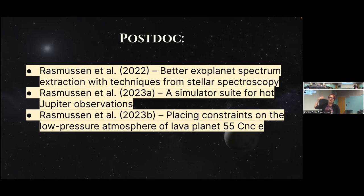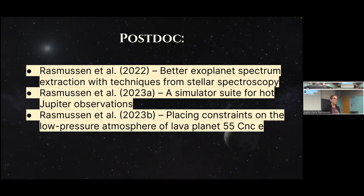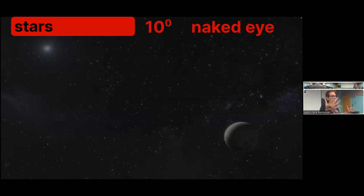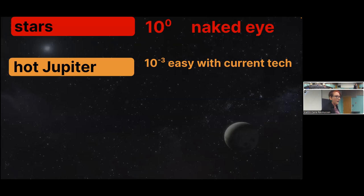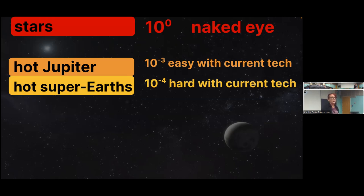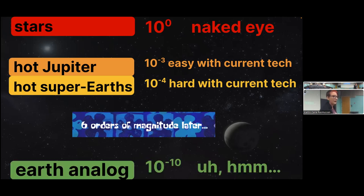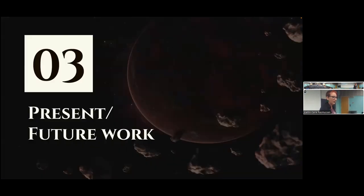For the last two or so years, I've been developing better exoplanet spectroscopy techniques using methods from stellar spectroscopy — implementing normalization algorithms that help you extract more data. I wrote a simulator suite for hot Jupiter observations, and right now I'm getting close to submitting a paper on constraints on the atmosphere of the lava planet 55 Cancri e. To summarize: I started in stars, then moved into hot Jupiter land — hot Jupiters have a contrast of about 10⁻³, about a thousand times fainter than their host stars. Then I worked on hot super-Earths at about 10⁻⁴. But six orders of magnitude later, we have Earth analogues. How do we deal with that? That's what I'm setting out to answer.